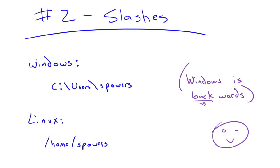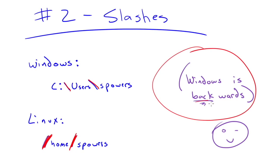Number 2: you may have noticed when talking about mount points and drive locations, I always use forward slashes. That's because in Linux you use forward slashes, whereas in Windows you use backslashes. I like to think that Windows is backwards because of the backslashes.